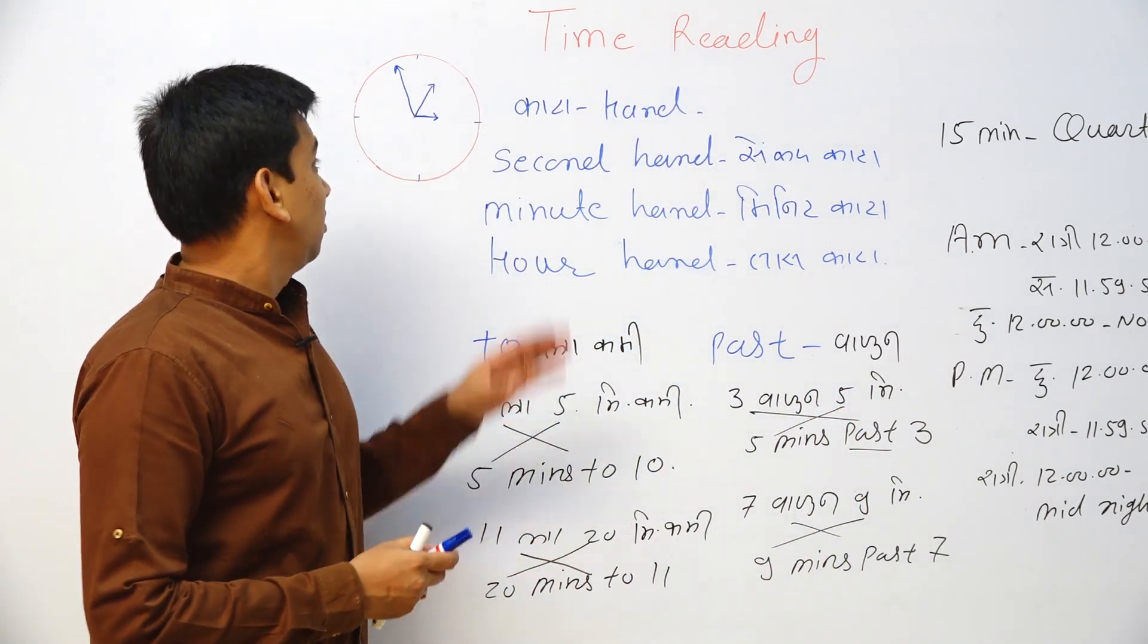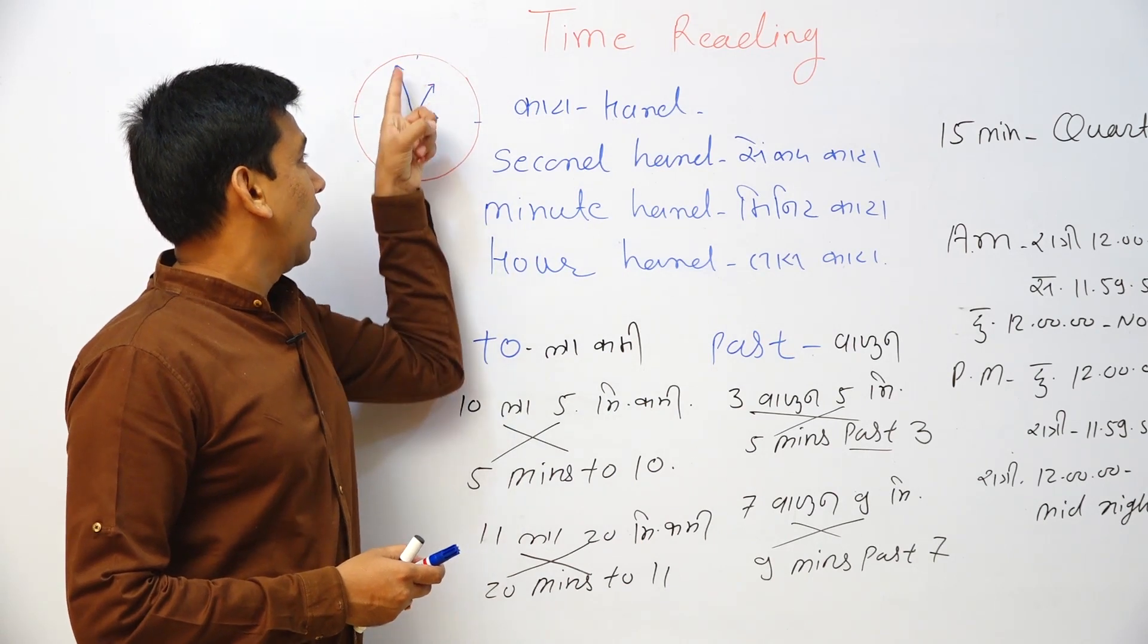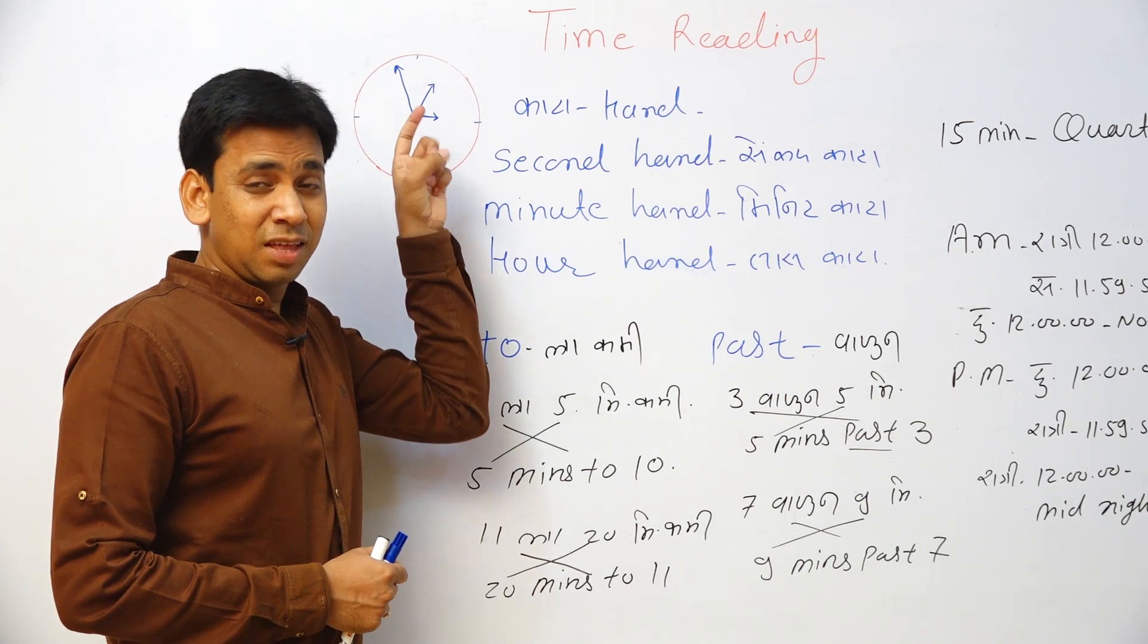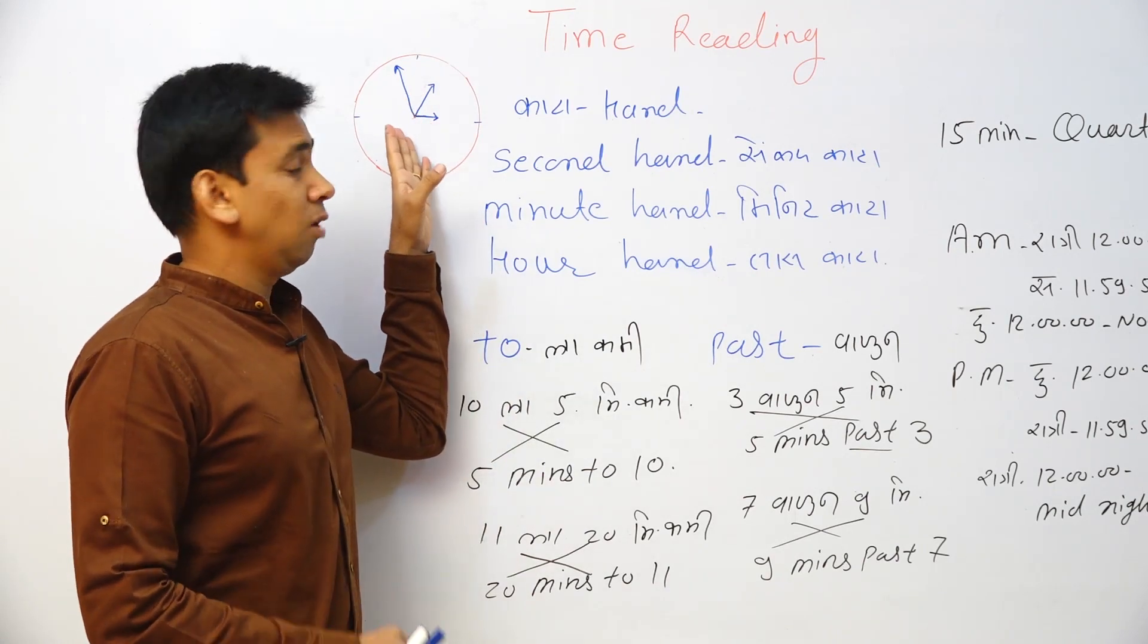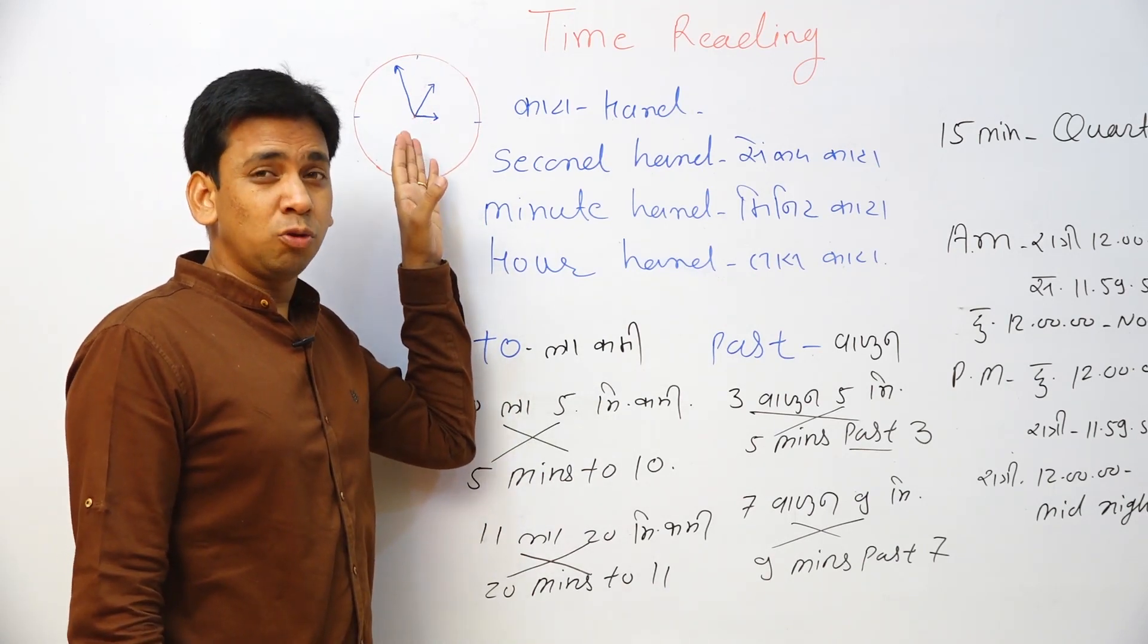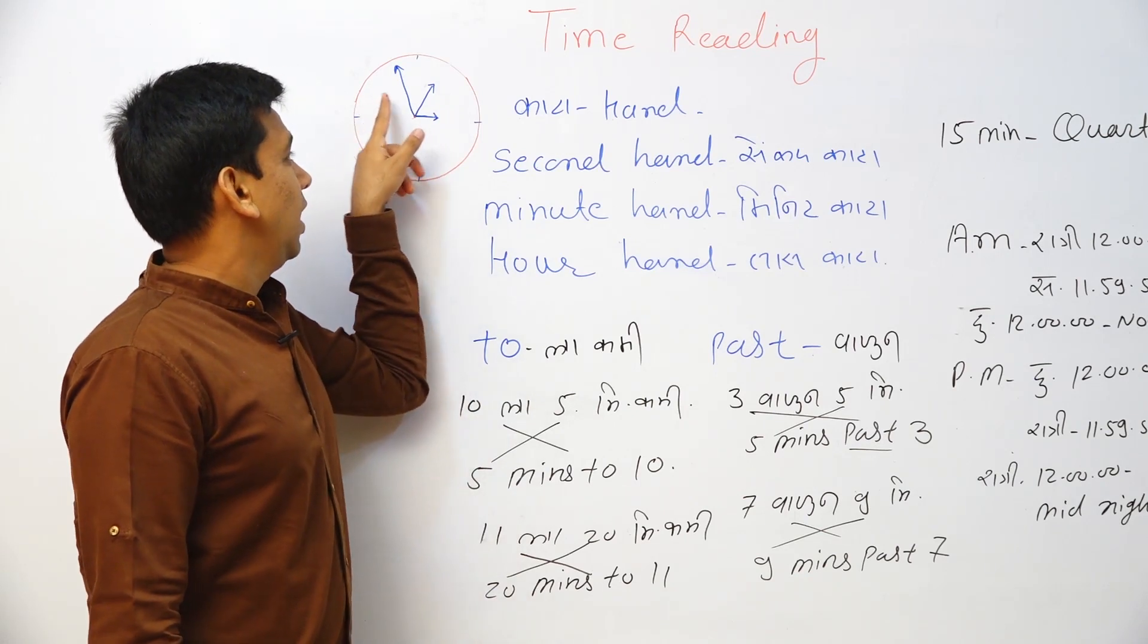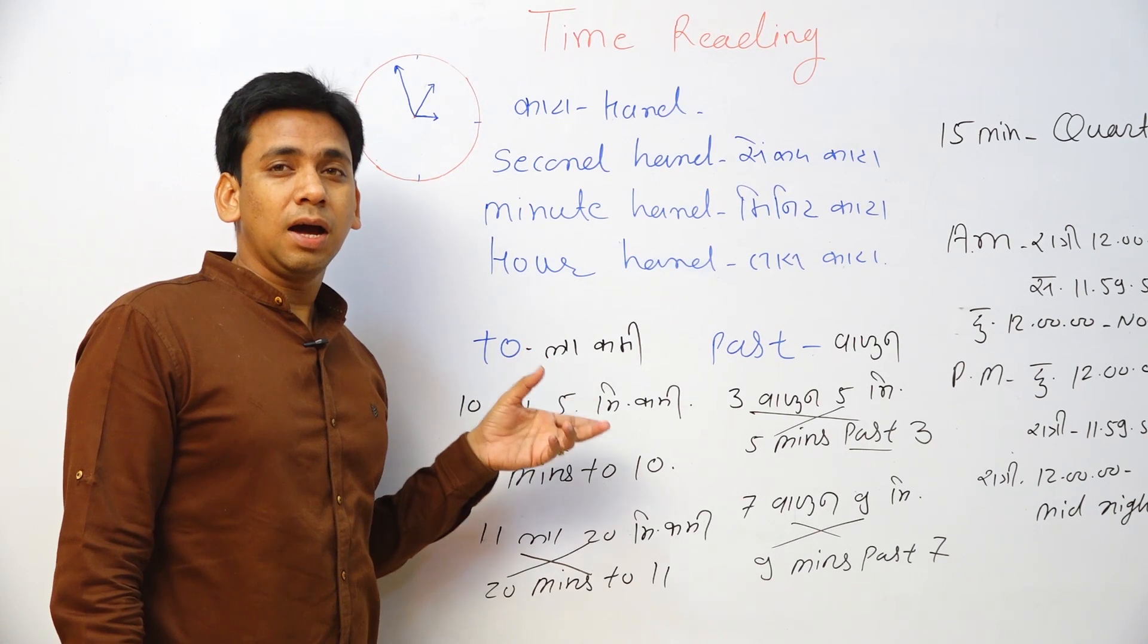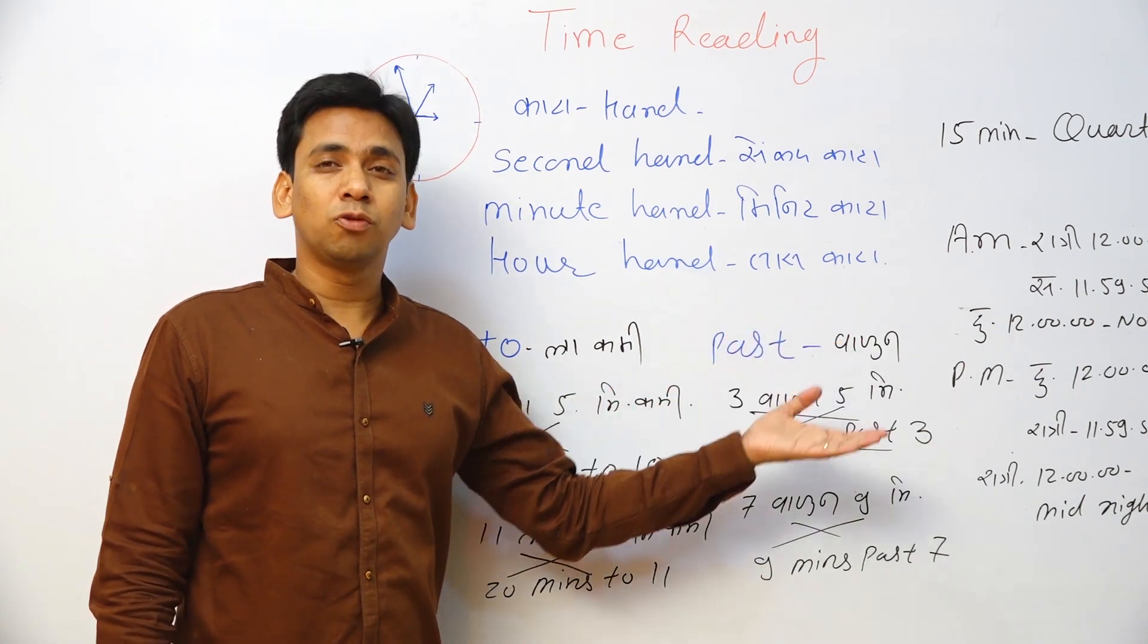So this is called as hands. Actually these, there are three. These are called as hands: second hand, minute hand, hour hand. 'To' means minus. 'Past' means plus.